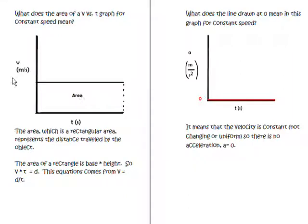In this case we have our velocity and our time. So the distance traveled is just the base of this rectangle times the height. Now what does the line drawn at zero mean in this graph for constant speed? It means that the velocity is constant, not changing and uniform, so there is no acceleration.